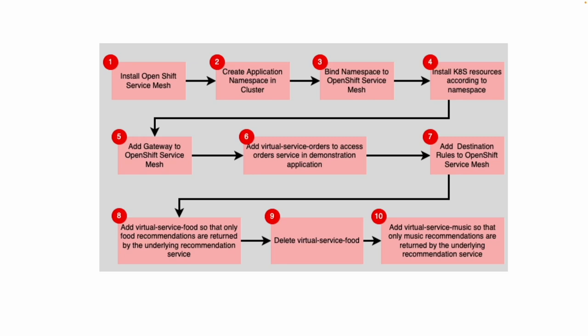In step eight, we're going to create a new virtual service called virtual service food, which will be bound to the recommendation service and return only recommendations from the deployment recommendations food. Then we'll delete virtual service food and add virtual service music so that only recommendation data from the deployment recommendations music is applied to the payment response. I'm going to use Postman to show all this in action.